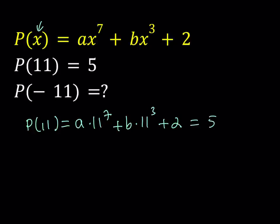Okay, now this gives you an equation. Obviously 11 to the 7th power is a very large number. You don't want to evaluate that. And 11 to the 3rd power is also a large number. Not that large in comparison. But we're trying to find P of negative 11. So could we find a relationship that will make our job easier?